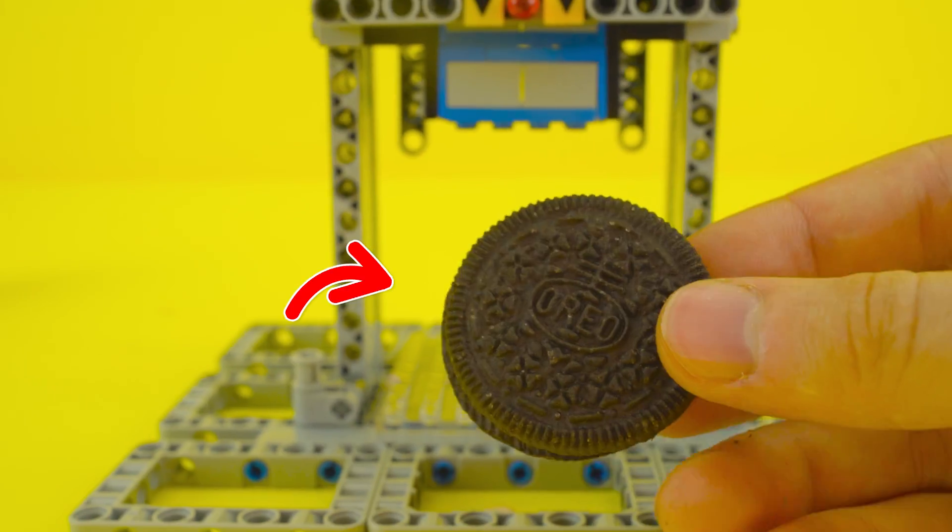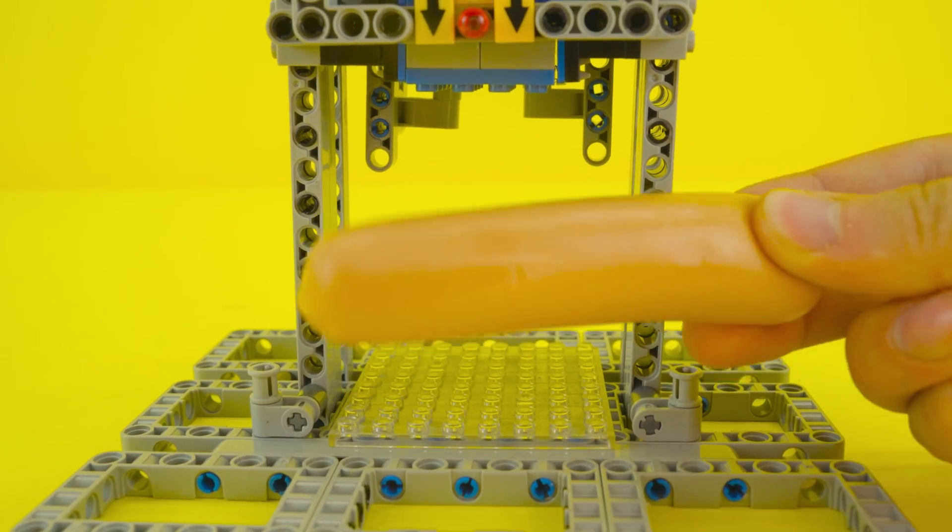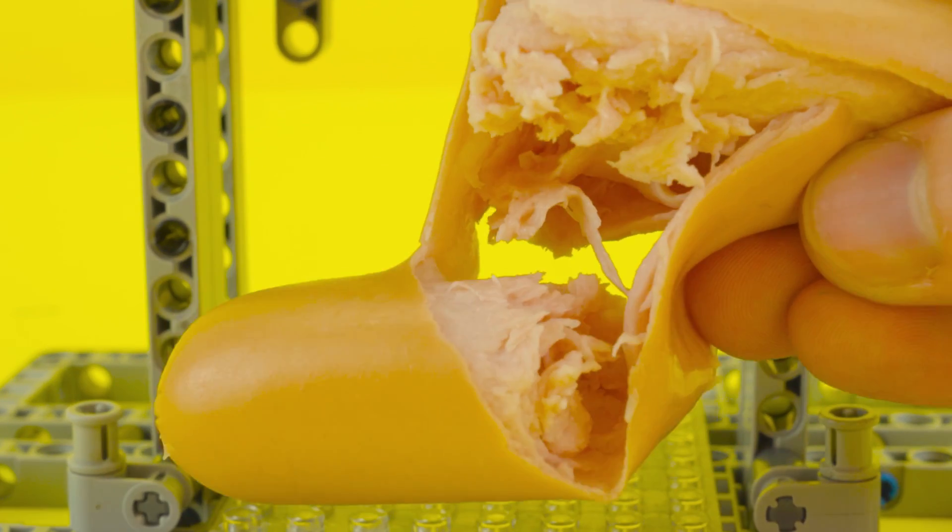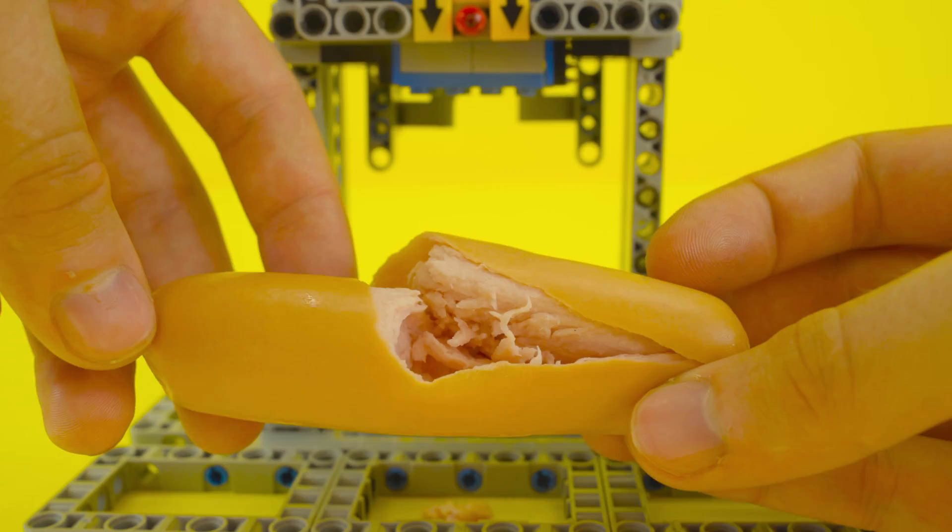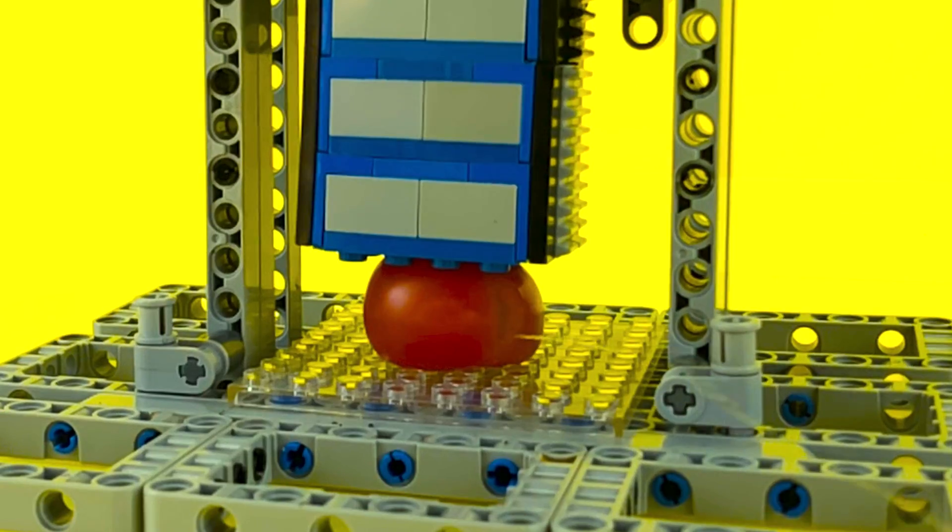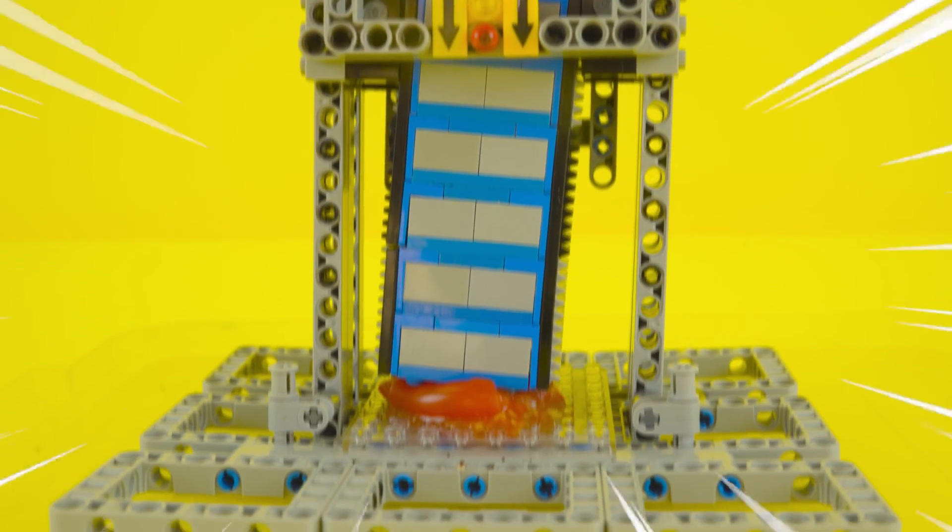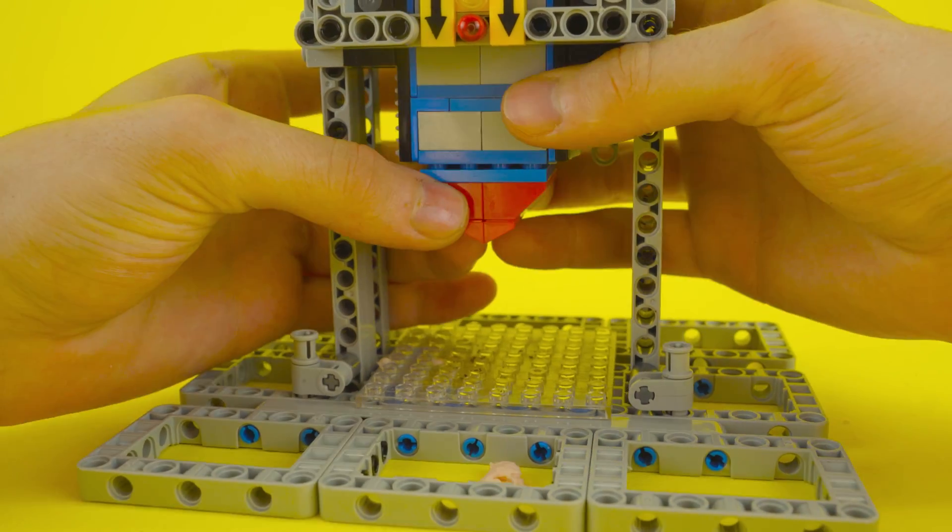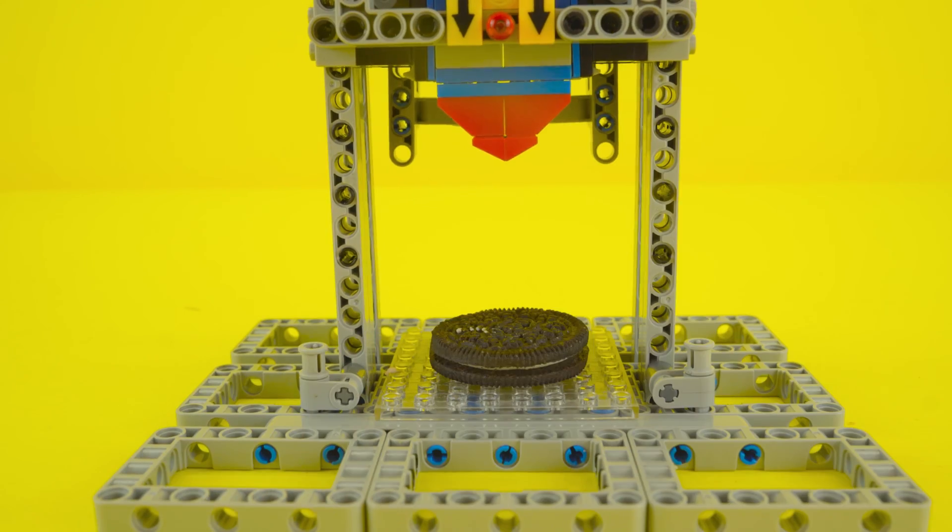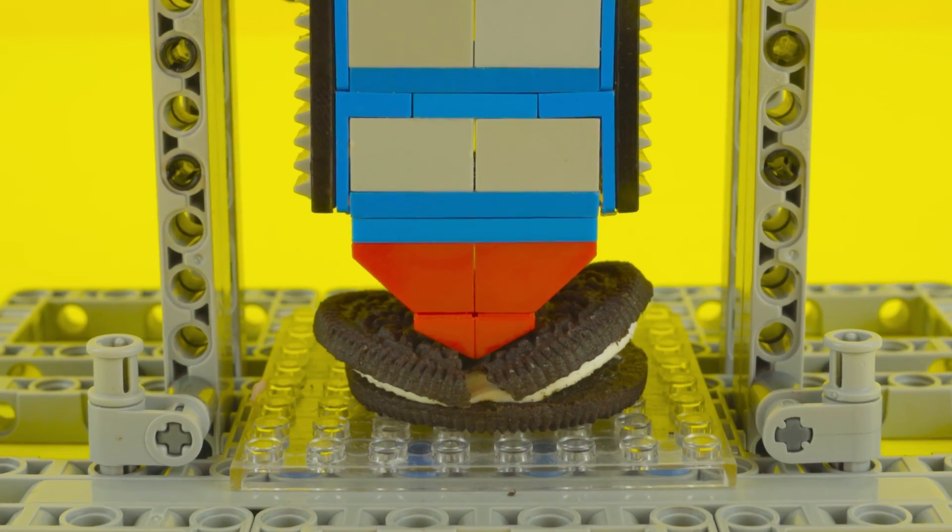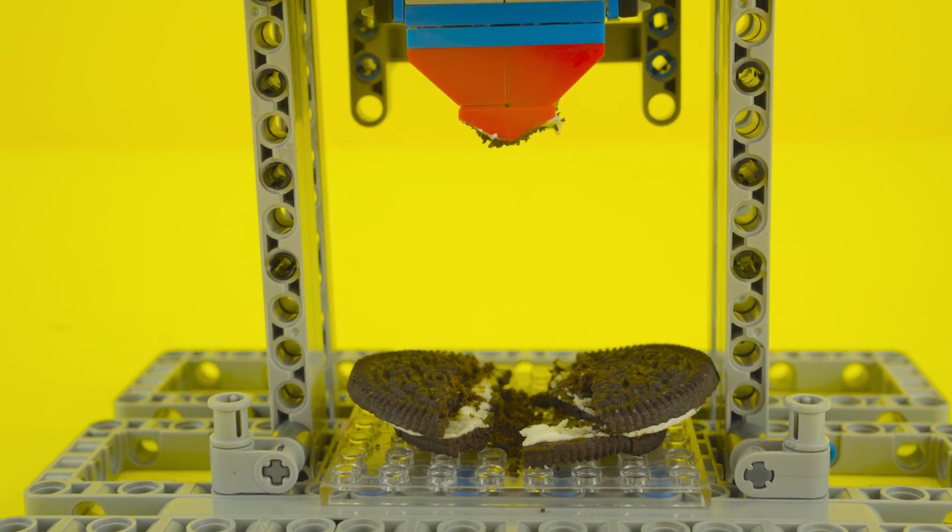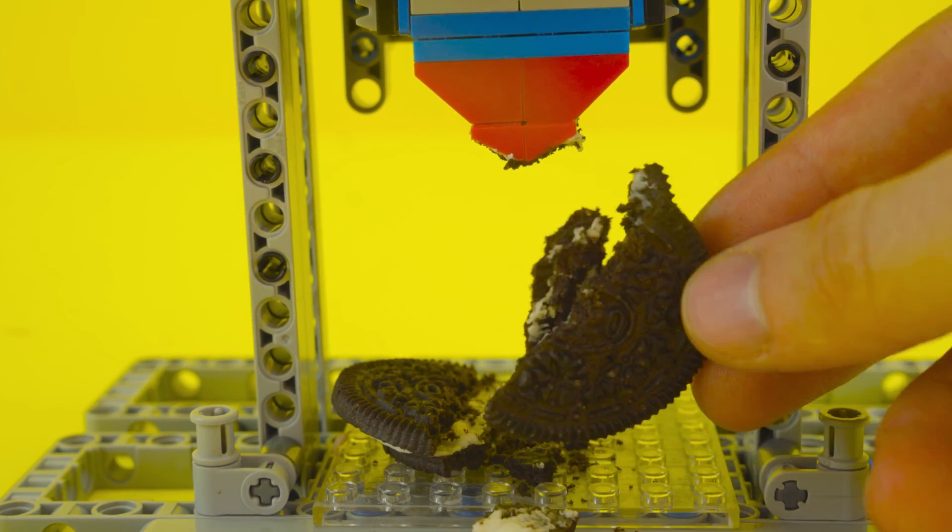To finish, we'll crush a tomato, Oreo cookies, and a sausage. For tomato, the press squeezed every last drop of juice out of it. The wedge-shaped press attachment makes quick work of the cookies. That's one more experiment down.